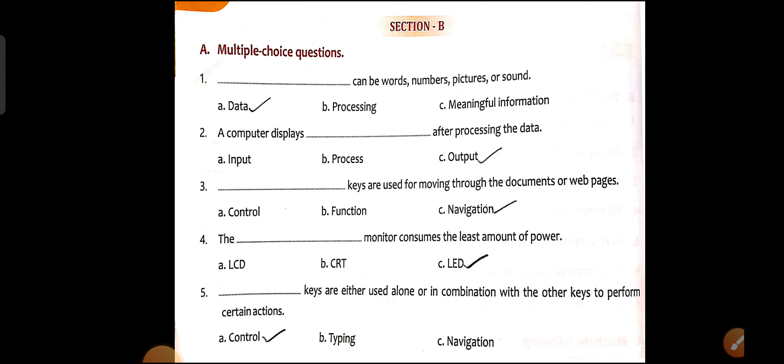Point number 5: Blank keys are either used alone or in combination with other keys to perform certain actions. These are special keys like the Control key — for example, Ctrl+A to select all, Ctrl+B to bold, Ctrl+N for a new page. We have completed our exercises and will continue with question and answer in the next video. Thank you, have a nice day.